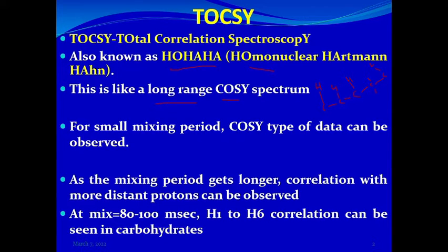For example, this proton can show TOCSY correlation with another proton that is one, two, three, four bonds away, but it cannot show TOCSY correlation with a proton on the other side of a quaternary carbon, because that quaternary carbon breaks the spin system at that point.